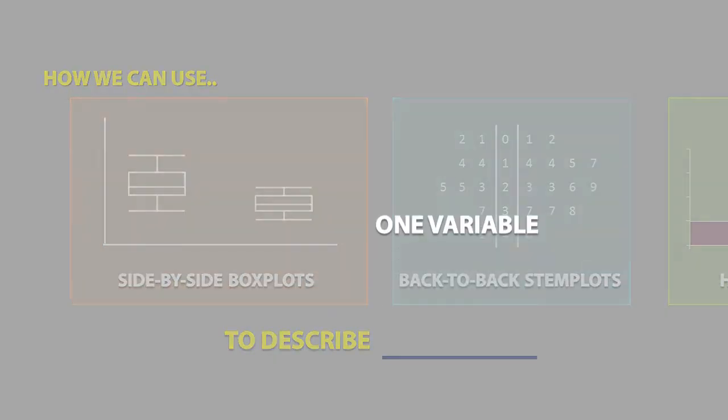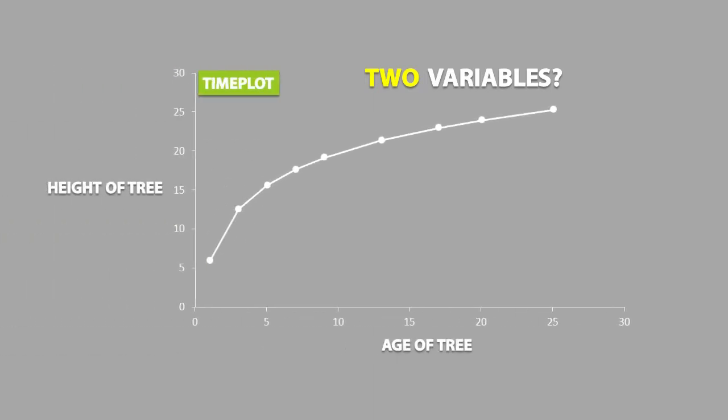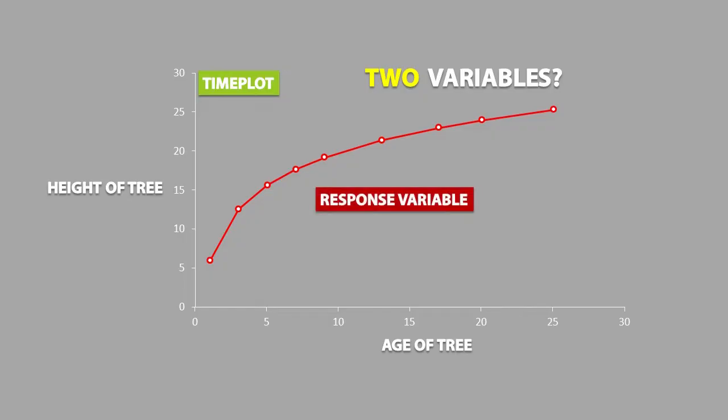These were good for describing one variable, but what about two variables? Well, we saw that we can use a time plot to show this. If there is a relationship between these two variables, one can be called the response variable and the other can be called the explanatory variable.